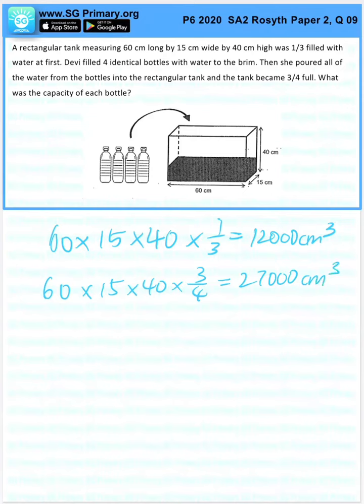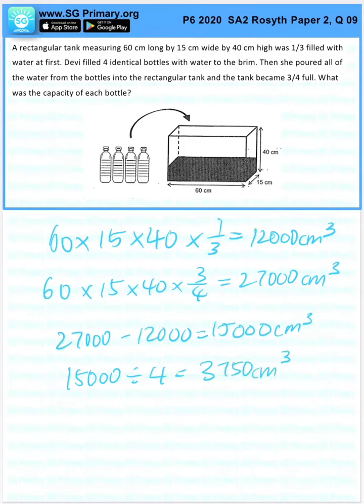So the difference will be the four bottles. One bottle will be 3,750 cm³.